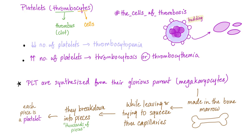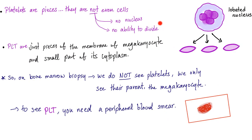Platelets, or thrombocytes, are the cell of thrombus. When we have a decreased number of platelets, this is thrombocytopenia. When you have an increased number of platelets, this is thrombocytosis or thrombocythemia. Platelets are synthesized from the megakaryocyte, which is made in the bone marrow. While leaving, trying to squeeze through sinusoids, they break down into pieces. Each megakaryocyte will give you thousands of platelets. Platelets are pieces — they are not even cells. They have no nucleus and no ability to divide; they depend on the megakaryocyte to divide and get their granules from its cytoplasm.